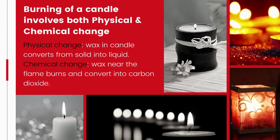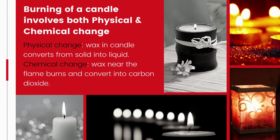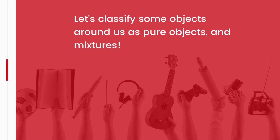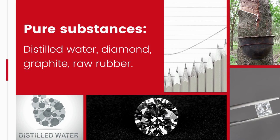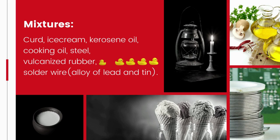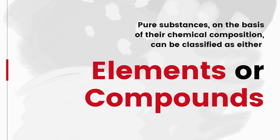During burning of a candle, both physical and chemical changes take place. The wax converts from solid to liquid — a physical change, as it is a change of state and can be reversed. However, wax near the flame burns and converts into carbon dioxide, which cannot be converted back into wax — so this is a chemical change. Although ice, water, and water vapor look different and have different physical properties, they are chemically the same. Examples of pure substances: distilled water, diamond, graphite, raw rubber. Examples of mixtures: curd, ice cream, kerosene oil, cooking oil, steel, vulcanized rubber, solder wire.